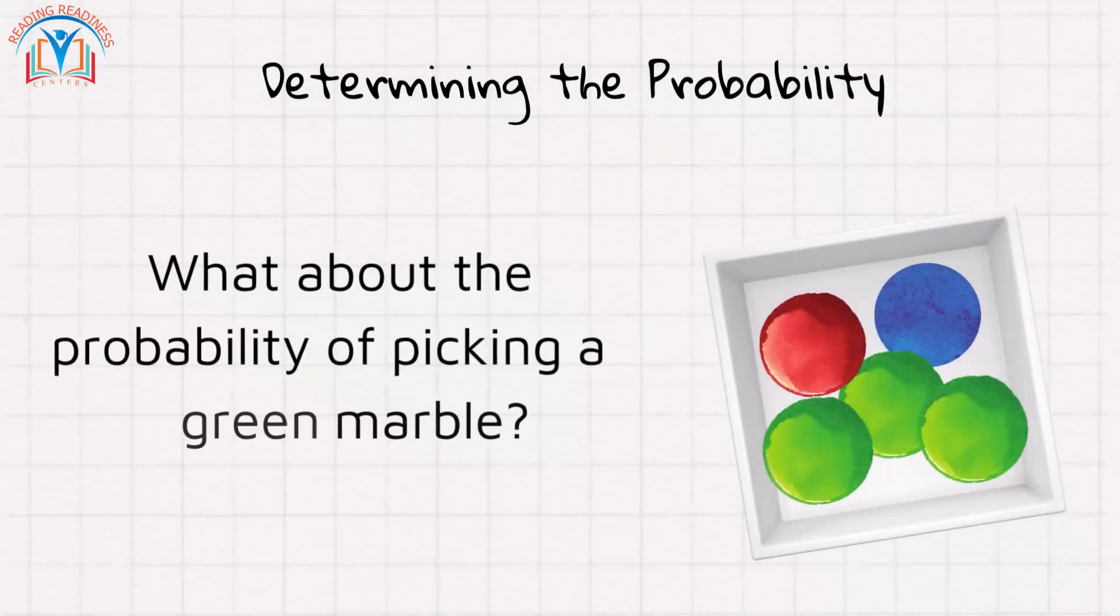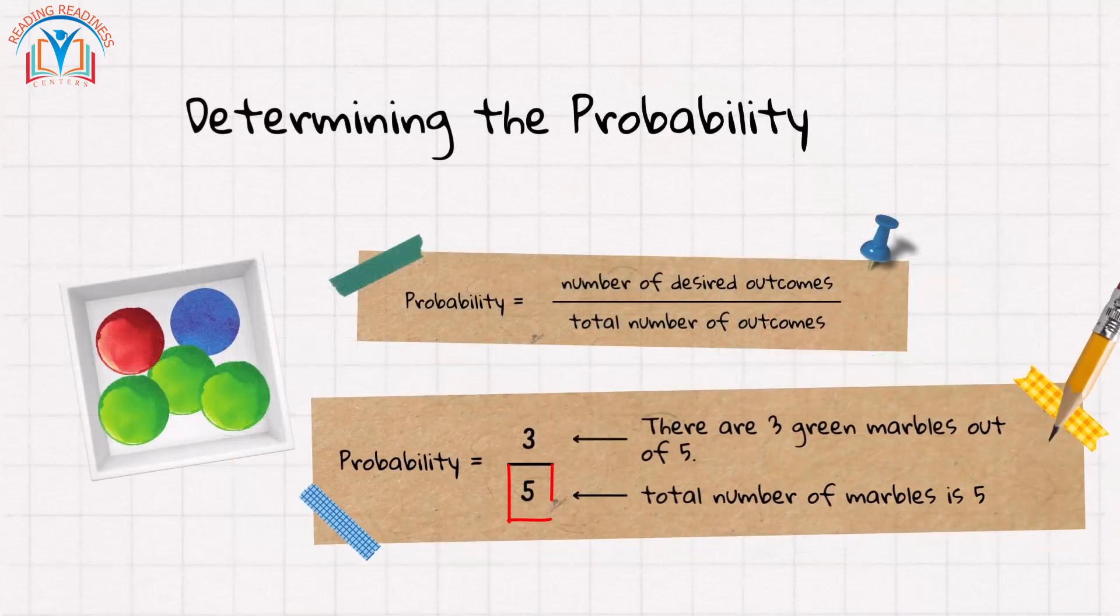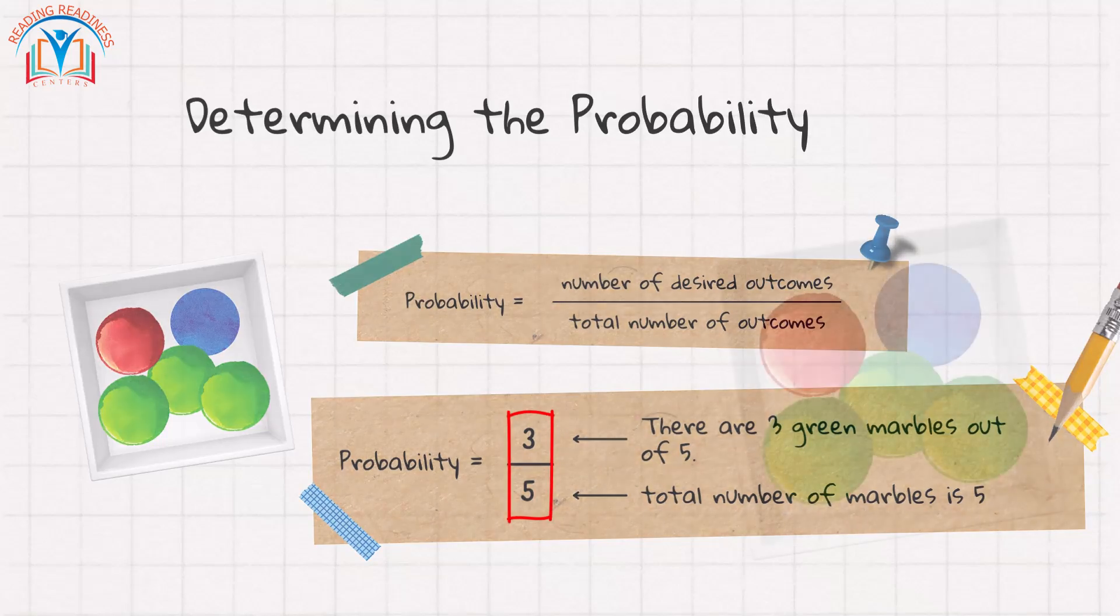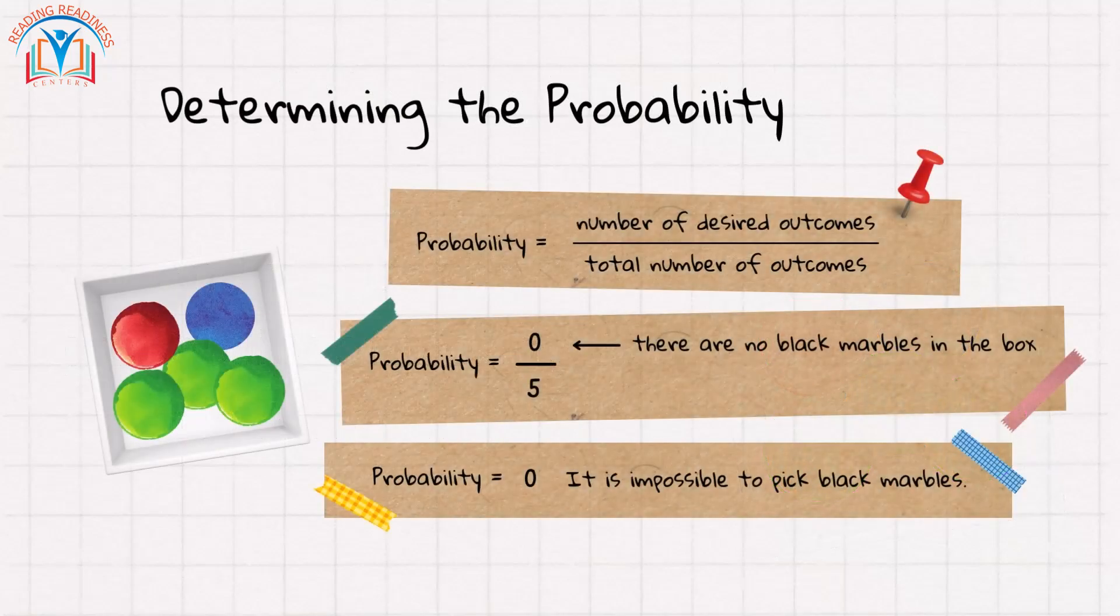What about the probability of picking a green marble? There are three green marbles out of five, so the probability is 3/5. And what's the probability of picking a black marble? There are no black marbles in the box, so the probability is 0/5, which is zero. It is impossible to pick a black marble.